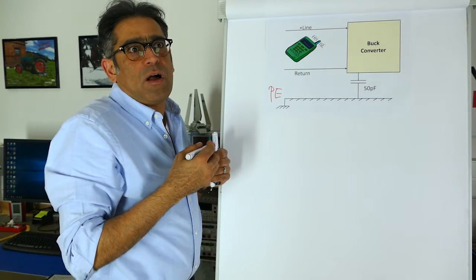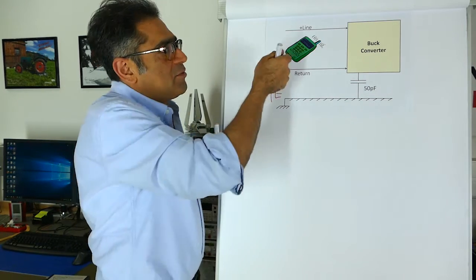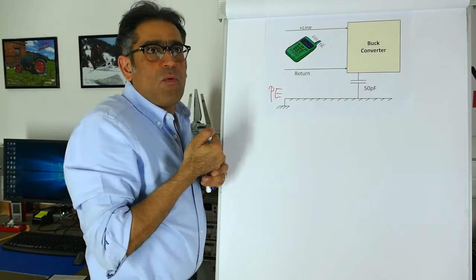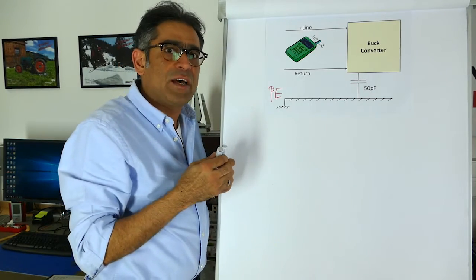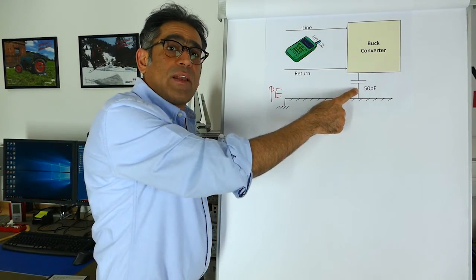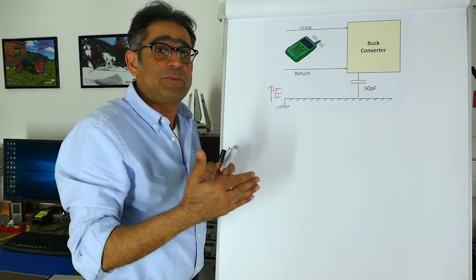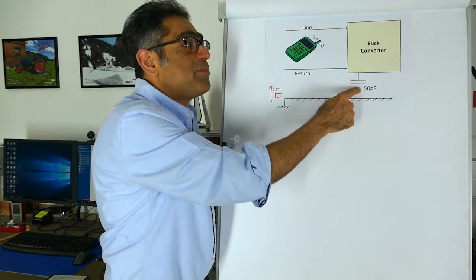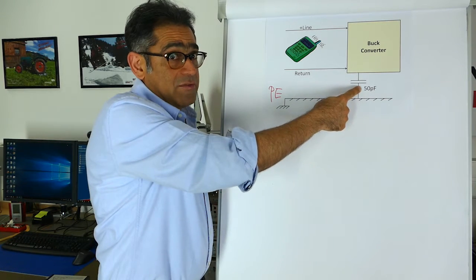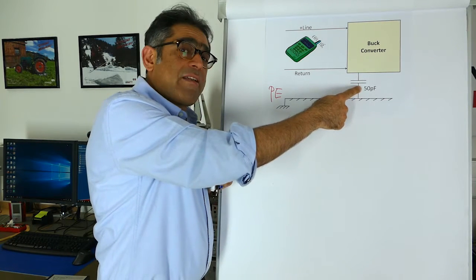If your frequency which was coupling into this was, let's say, 150 kilohertz, the impedance of this will be quite large. If it's about 30 megahertz, which is top of the conductive emissions band, the impedance of this will be not that big. It will be probably around 100 ohms.